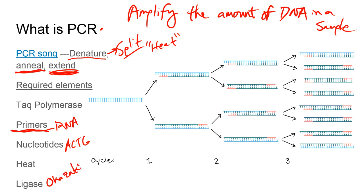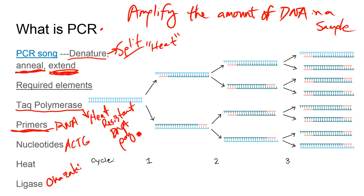Ligase is going to connect our Okazaki fragments together and we're going to make a lot of them through this process. Tac polymerase is pretty much the same enzyme as DNA polymerase, although it will not break down in the presence of heat. Most enzymes will denature if they're heated or cooled rapidly, but tac polymerase doesn't do that — it's a very special, heat-resistant enzyme that's really important in this process because throughout a PCR reaction you're constantly heating and cooling the molecule in order to split it up and make more.